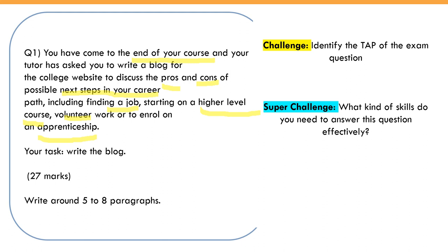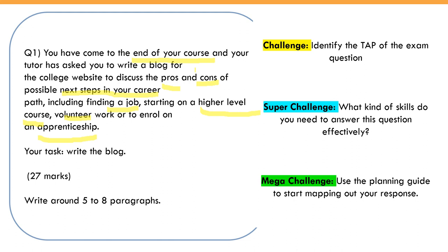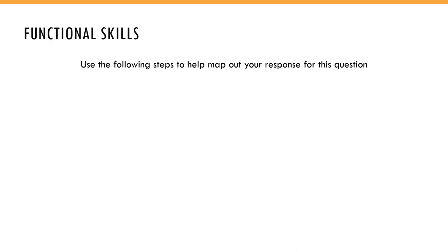Next, think about what skills you need to answer this question effectively — the things we went over in previous lessons that are going to make sure you get a pass. Then use the planning guide to start mapping out your response. Generally, you shouldn't spend any more than five minutes planning, and this applies at Level 1, Level 2, and through to GCSE as well. We're going to go through four simple steps to help you improve your planning and ultimately your writing.